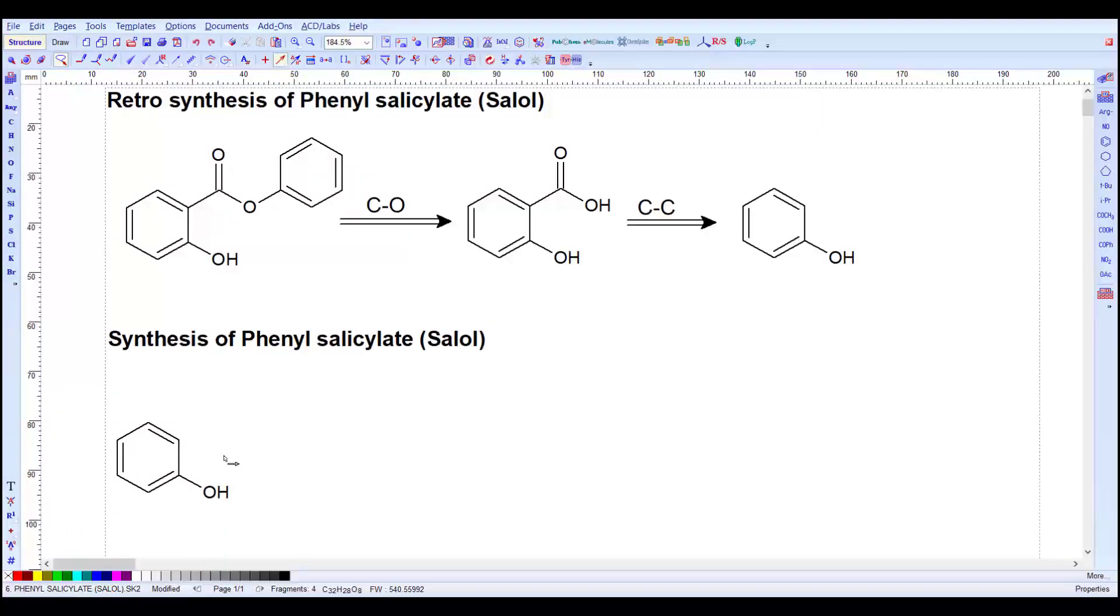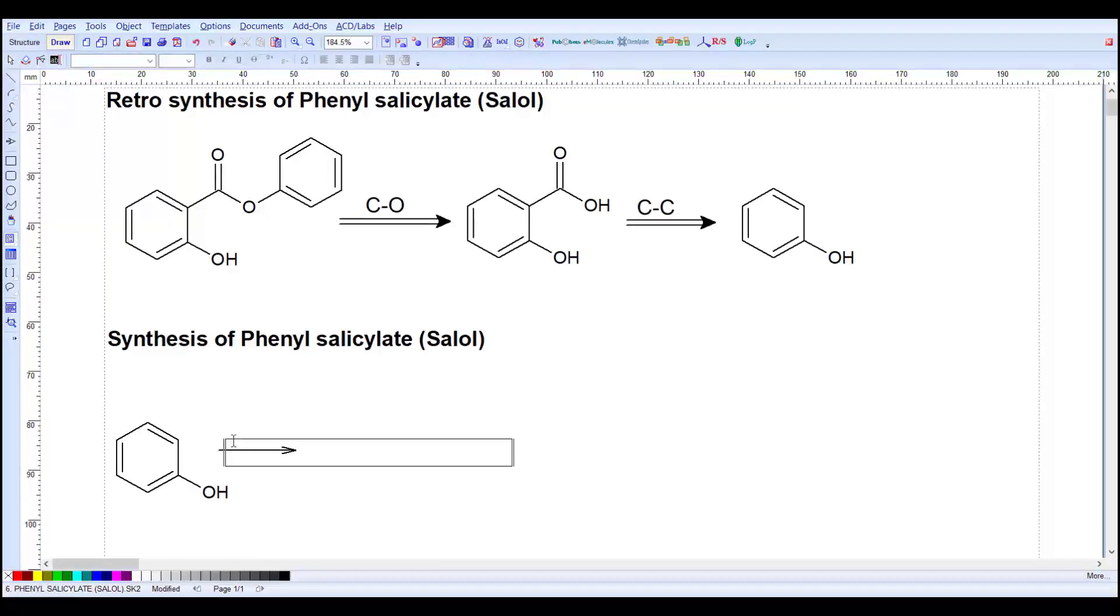Now we start with phenol. We have to add NaOH. Let's write the NaOH here so we can easily write out our synthesis in a good manner. This is NaOH. Put it somewhere here, just on top of that arrow.